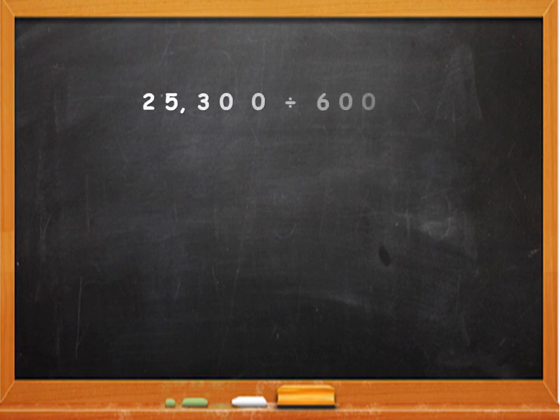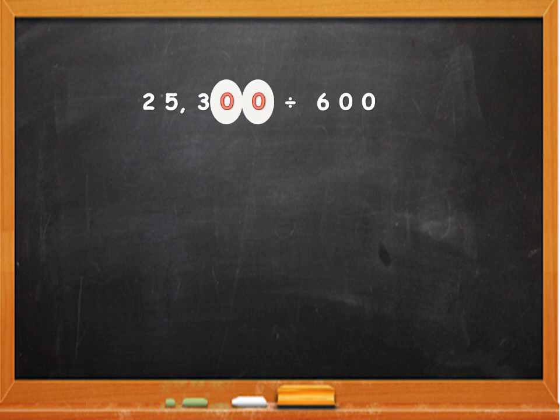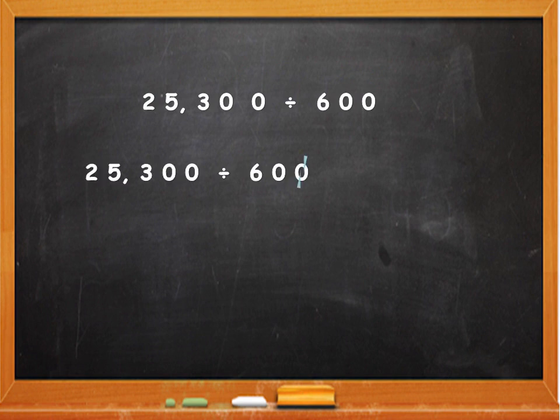The last example that we are going to do today is 25,300 divided by 600. You can see here the dividend has two 0s as well as the divisor also has two 0s. Since the number of 0s are same in both the dividend and the divisor, we can cancel all the 0s here. So, write the sum 25,300 divided by 600 and cancel two 0s in the divisor, two 0s in the dividend. So, what are we left with?